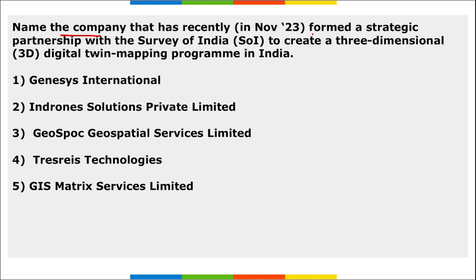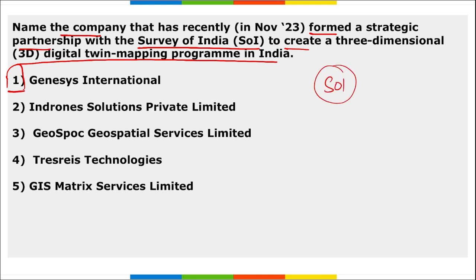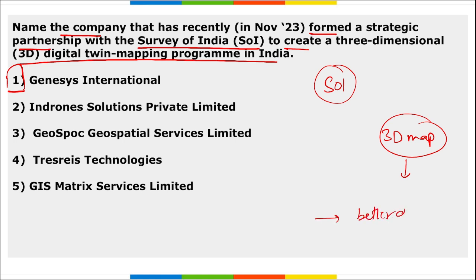Next: which company recently formed a strategic partnership with Survey of India to create a 3D digital twin mapping program in India? It is Genesis International. Survey of India formed a strategic partnership to create a 3-dimensional twin mapping program in India with Genesis International. This will develop a 3D map of cities, helping decision makers with visual analysis for better decision making — everything viewable in a 3D way.